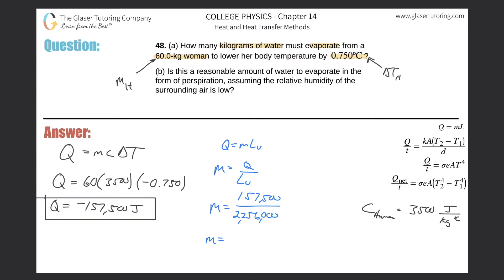So here we go. Ready? So this is going to be then divided by 2,256,000. And we get about 0.0698, right? That is in terms of kilograms. And that would be the answer. They wanted it in kilograms.